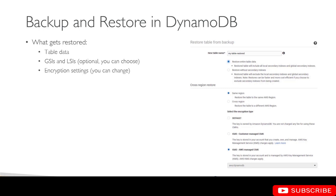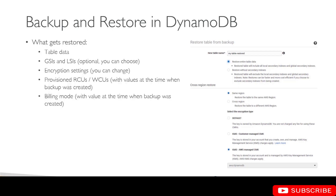You can change the encryption configuration when running the restore operation. The provisioned capacity that was recorded at the time of the backup will be applied to your table, and you can change it after the restore process is done. The billing mode will also have the same value as at the time of backup — so if you had provisioned capacity mode, that will be applied, or if you used on-demand mode, the new table will be created with on-demand mode.